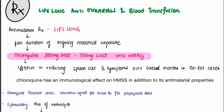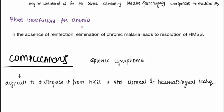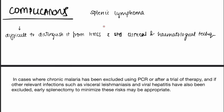Splenectomy is not usually performed due to mortality risk; it is only considered for severe, debilitating massive splenomegaly unresponsive to medical management. Blood transfusion can be done in cases of anemia. Elimination of chronic malaria usually leads to resolution of HMS. If left undiagnosed and untreated, HMS can convert to splenic lymphoma, which is difficult to distinguish using standard clinical and hematological techniques. If chronic malaria is excluded via PCR or after a trial of therapy, and other infections such as leishmaniasis or viral hepatitis are excluded, early splenectomy may be considered to minimize the risk of conversion to splenic lymphoma and complications such as portal hypertension.